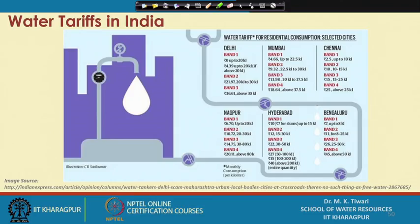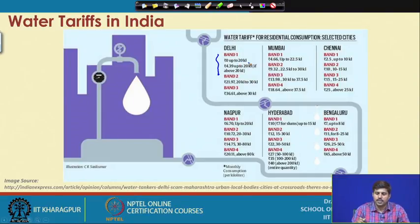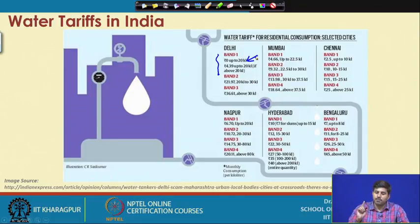IBT is a good structure for Indian cities with wide income variation — those who can pay higher prices do so, while the majority can access water affordably. Where connections are metered, IBT is generally used; for unmetered towns, flat prices are typically applied.